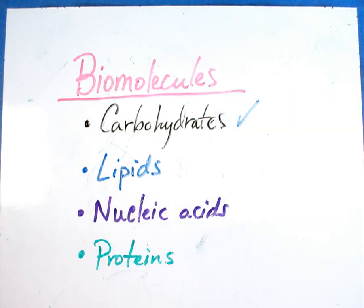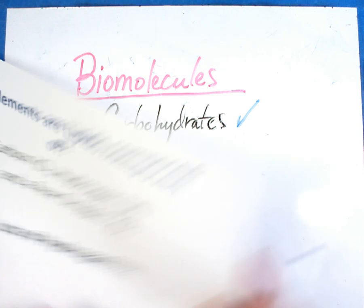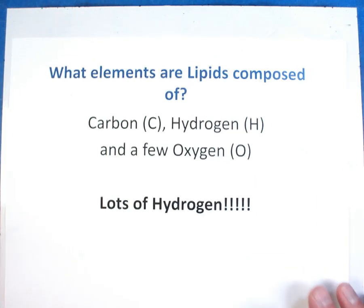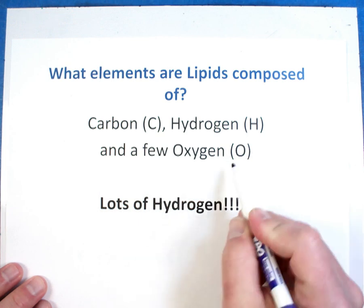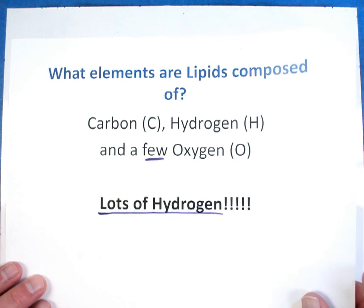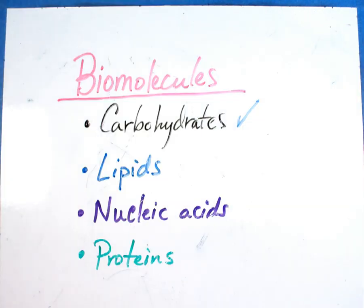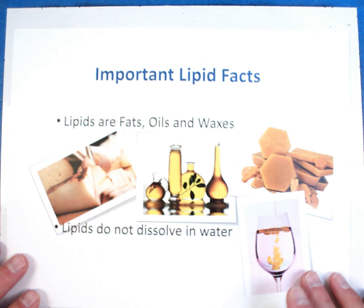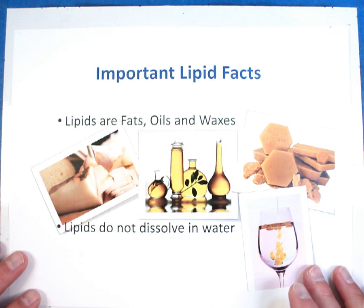Let's talk next about lipids. What are the elements that compose a lipid. Lipids are made of carbon, hydrogen, and a few oxygen. Hint. Lots and lots of hydrogen. Lots and lots of hydrogens are found in lipids.